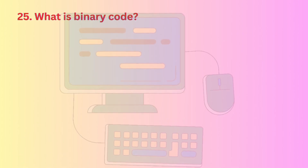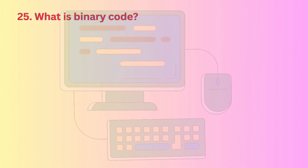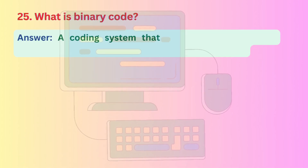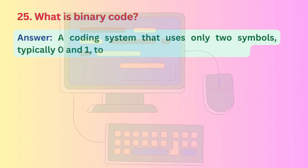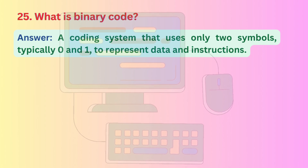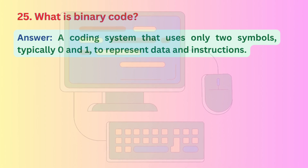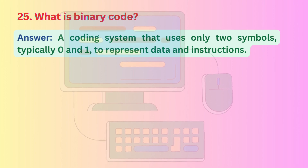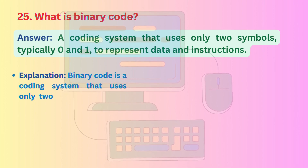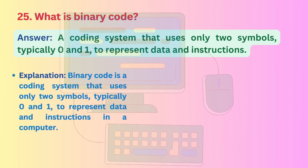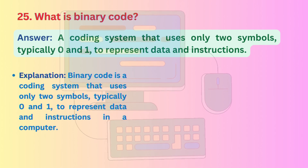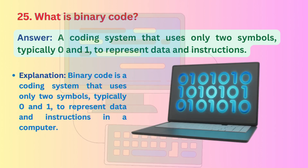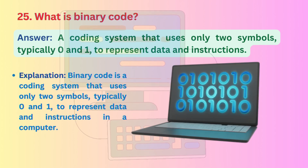Question 25: What is binary code? Binary code is a coding system that uses only two symbols, typically 0 and 1, to represent data and instructions in a computer.